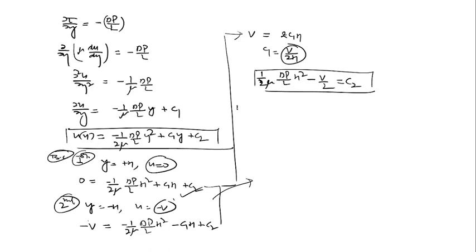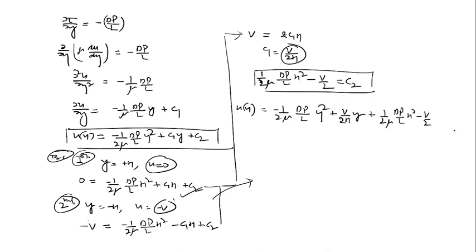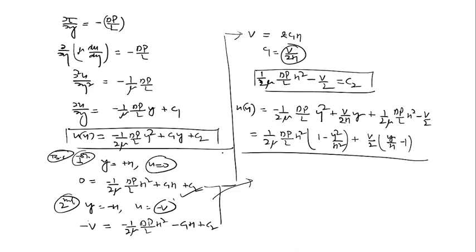Substituting C1 and C2 back into the velocity equation: u(y) equals minus 1 over 2mu times delta_p over l times y squared, plus v over 2h times y, plus 1 over 2mu times delta_p over l times h squared, minus v over 2. Taking delta_p over l times h squared over 2mu common: we get (1 minus y squared over h squared), plus taking v over 2 common: we get (y over h minus 1). Checking which option matches — option A is correct.